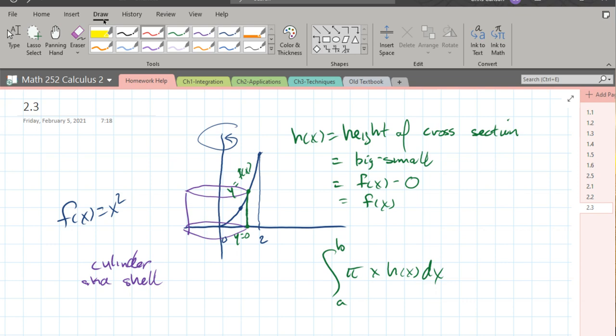So how does this form a shell? We have a cross section right here, a vertical cross section. When you rotate it about the y-axis, that shape, the top point rotates like that, the bottom one rotates like that, and then the vertical piece fills it in like this.